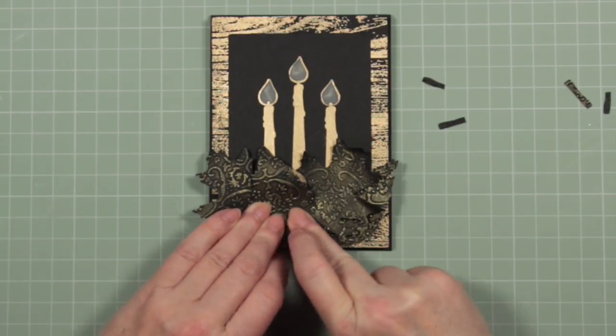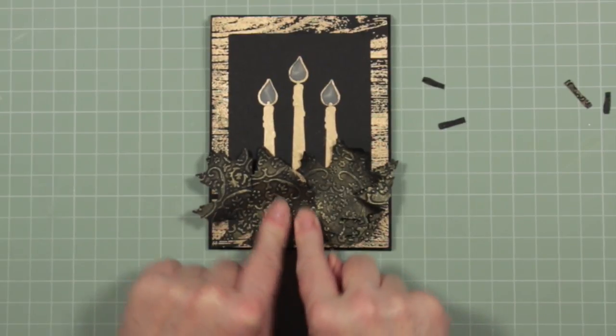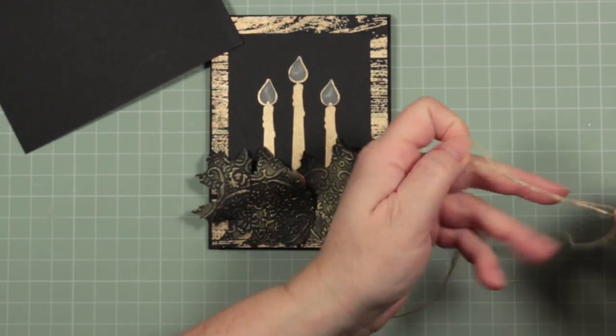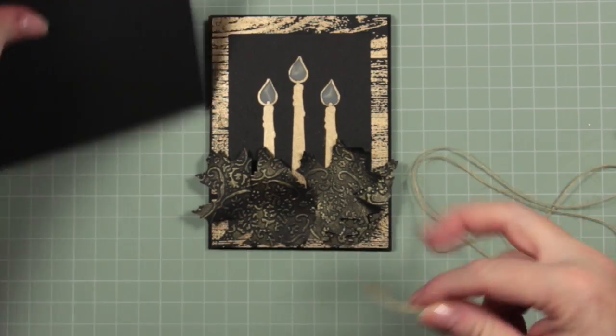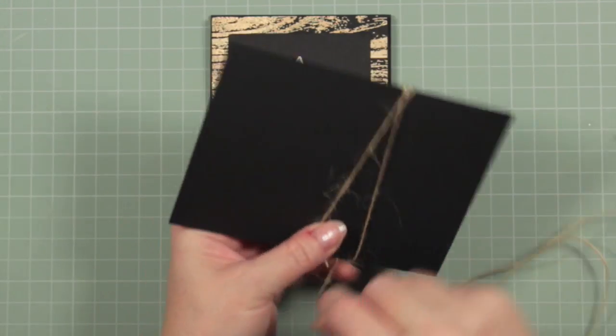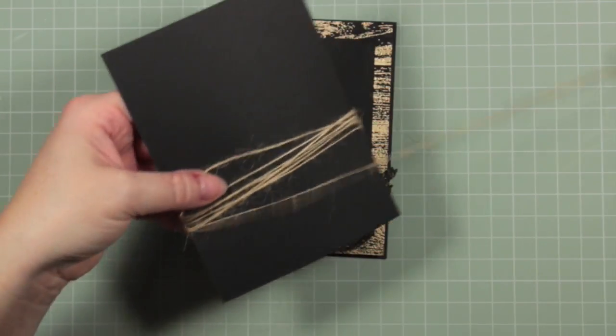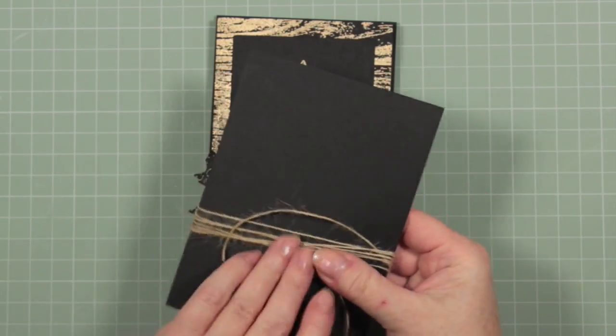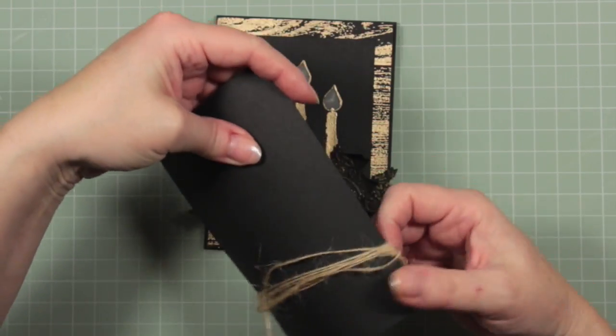I'm going to make a central bow to complete the card at the bottom. I thought it looked a little bit bare. I thought it needed something else. I have some twine which I've rolled around a card a few times and I'm simply going to tie a knot in the middle and that will give me a lovely bow.